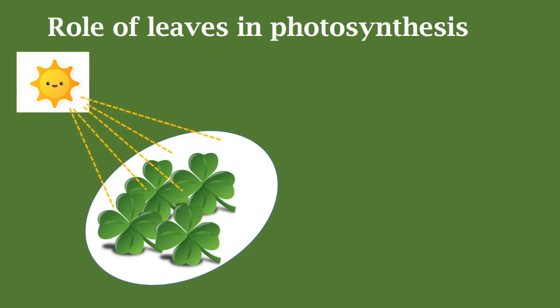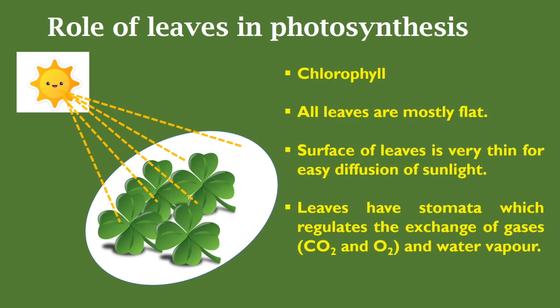Now let's understand the role of leaves in photosynthesis. A leaf contains the plant pigment chlorophyll, which absorbs sunlight during photosynthesis. Due to the presence of chlorophyll, leaves are green in color. Leaves are mostly flat so that their maximum surface area can absorb sunlight.